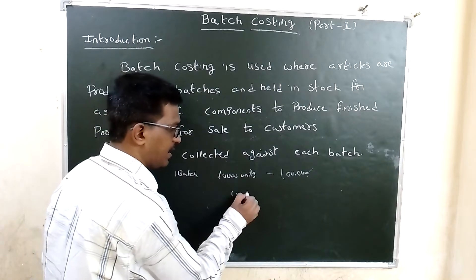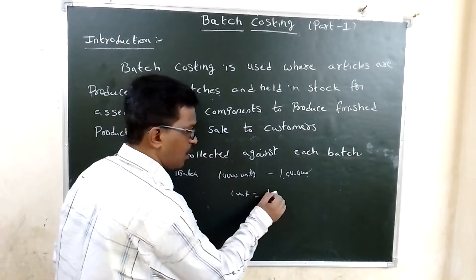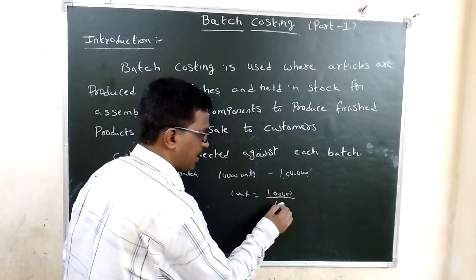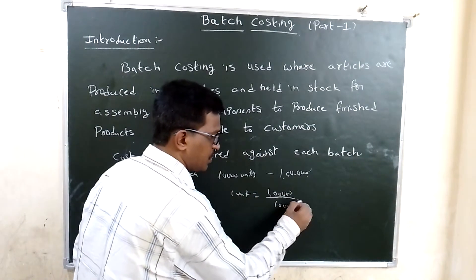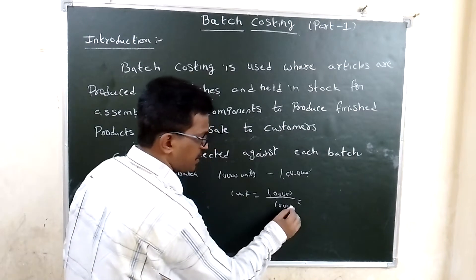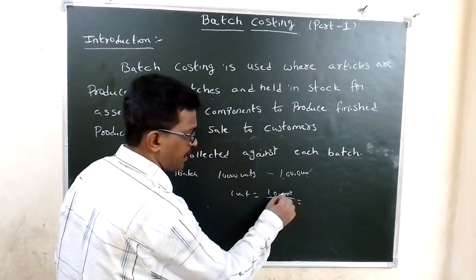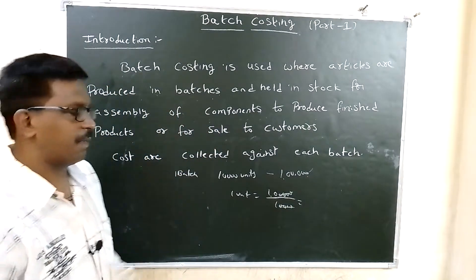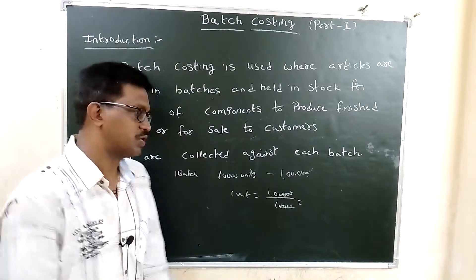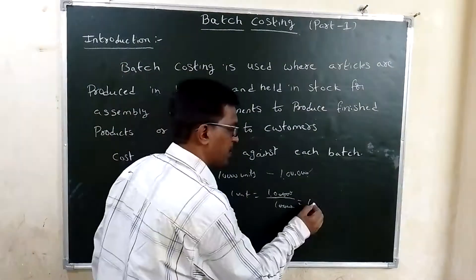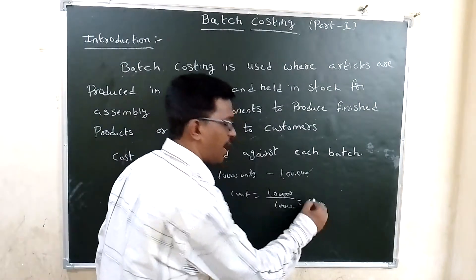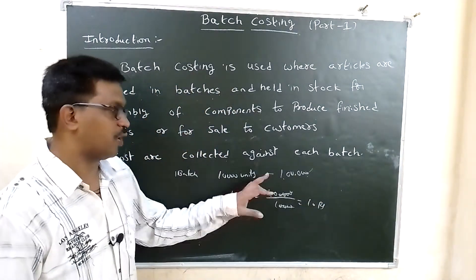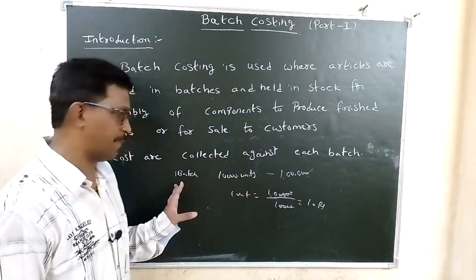What does cost per unit mean? One lakh divided by ten thousand. So in the division, one batch costs 10 rupees per unit. For example, manufacture 10,000 units for Rs. 1 lakh in a batch.